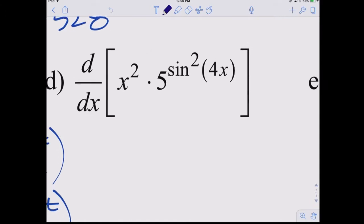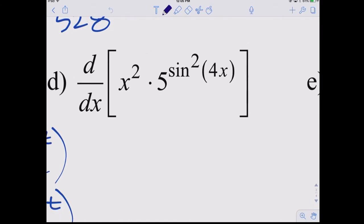So we left Friday with this one, and we didn't want to start this one on Friday because it probably would have gone on into Saturday, right? Just looking at it. So it's a good thing we waited. We're trying to find the derivative of that. It's x squared times 5 to the sine squared of 4x.